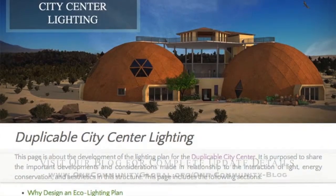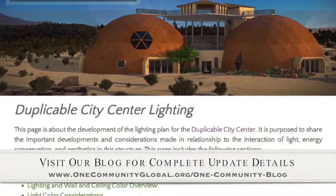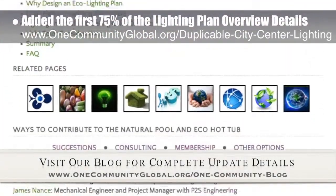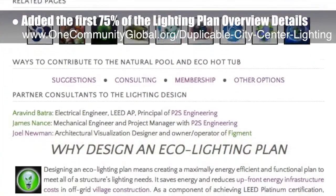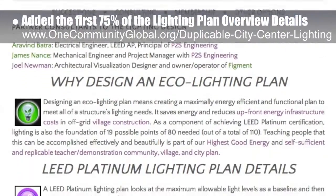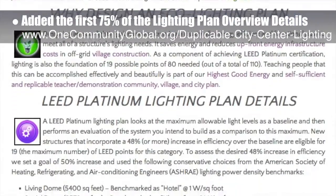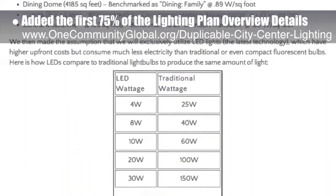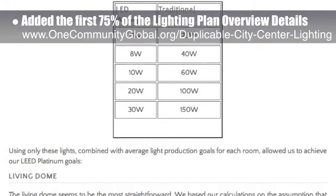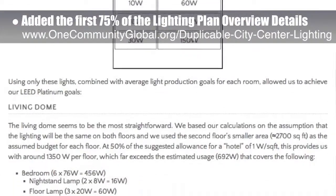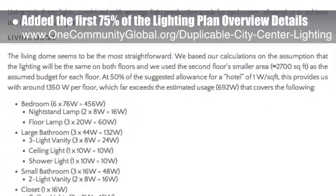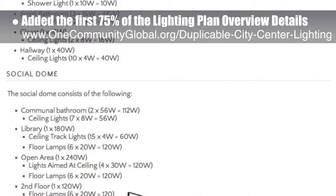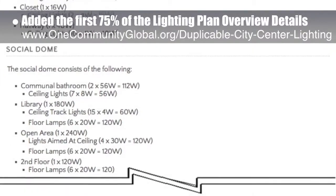This week the core team added the first 75% of the lighting plan overview details to the Duplicable City Center lighting plan page. You can see those details here and visit the lighting page for additional pictures and other specifics related to our lighting plan, which is designed to contribute to LEED Platinum certification for this structure.